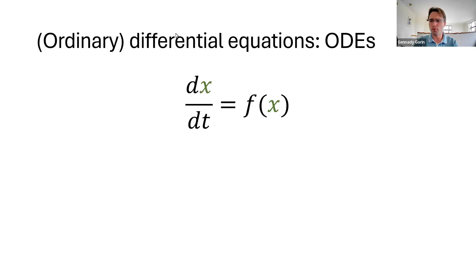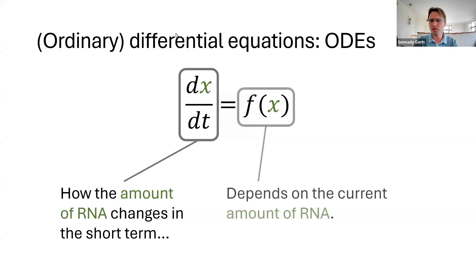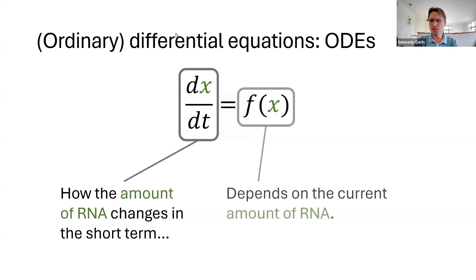We can start with differential equations, which are a way to formalize the idea that the amount of RNA is somehow dynamical, evolves over time, and this evolution might depend on the current amount of RNA. And there is a canonical way to do this. It dates back to Mano and other researchers in the 50s, and the simplest form of this has transcription degradation.